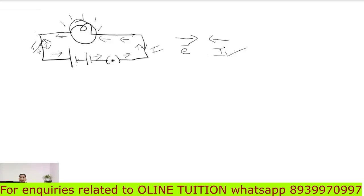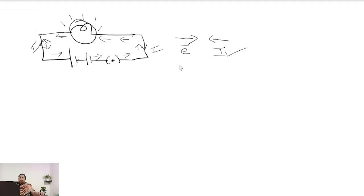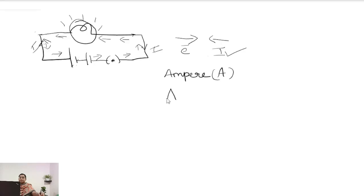Next we have to see the unit of the current. The unit of the current is ampere, denoted by the capital letter A. The instrument used to measure the current is the ammeter. The circuit symbol for the ammeter is this one.